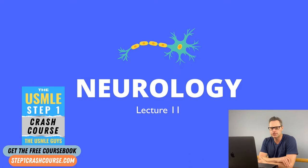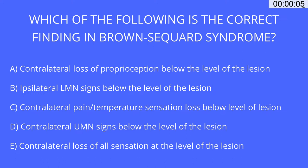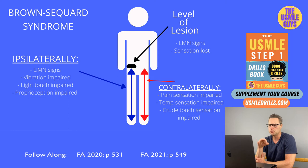Welcome back to the next lecture. Let's start with a multiple choice question — hit the pause button, try to figure it out, and come back when you think you've got the right answer. The correct answer is C. Let's talk about Brown-Séquard syndrome, which is super high yield and very often tested.